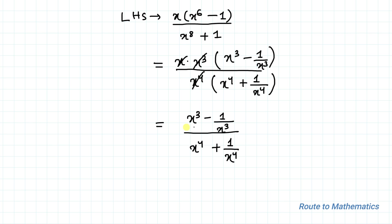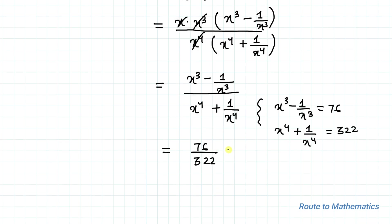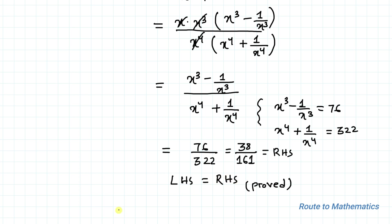We have already simplified the left hand side to (x³ - 1/x³) / (x⁴ + 1/x⁴). From Equation 1a, x³ - 1/x³ = 76, and from Equation 1b, x⁴ + 1/x⁴ = 322. Substituting these values gives 76/322, which simplifies to 38/161, which is our RHS. Hence LHS = RHS, proved. I hope you have understood the solution.